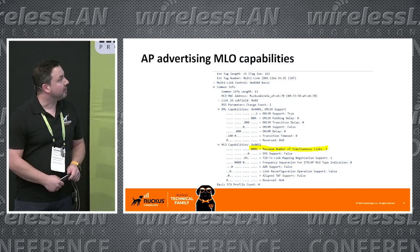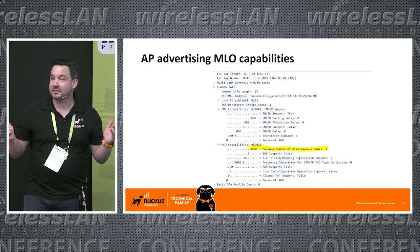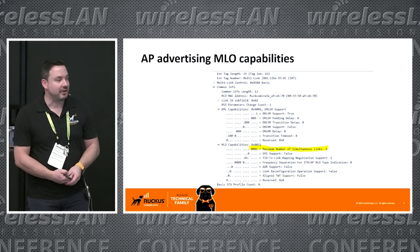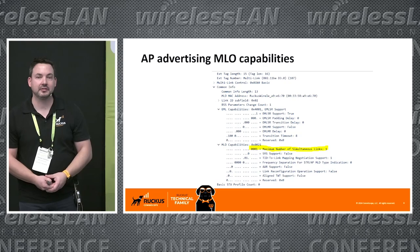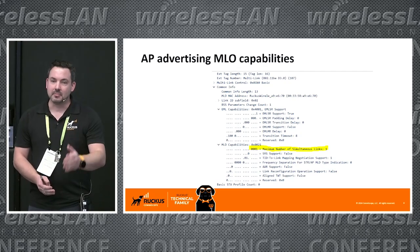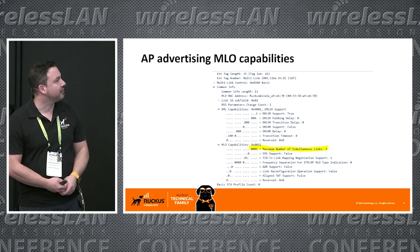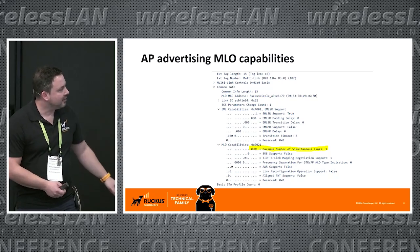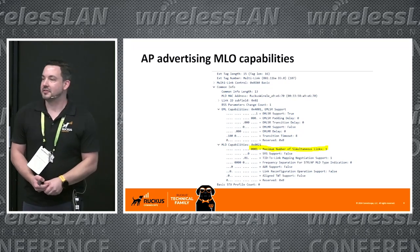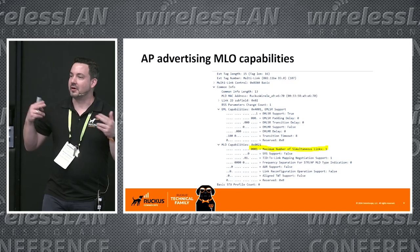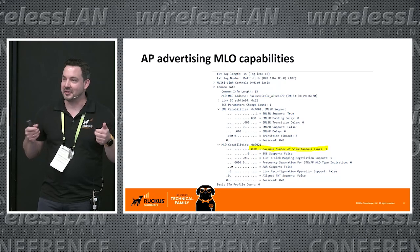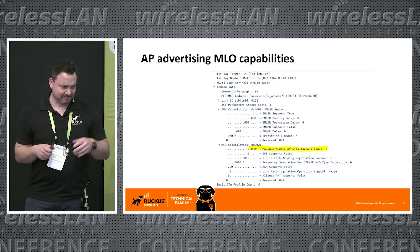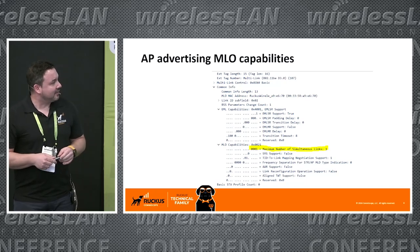Let me have a look at the basics. If you have the R770 in your lab, you can do a packet capture on all the radios and you will see beacons coming in. Within the beacons there is a new field in Wi-Fi 7 called the common info field, where you can see all the important stuff — MAC addresses and so on. I want to point out the maximum number of simultaneous links: you normally have to add one more, because simultaneous links of one means there are two links, not only one.